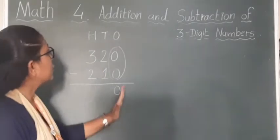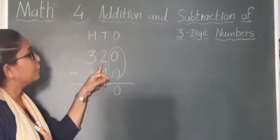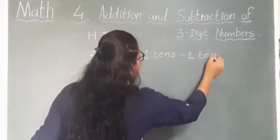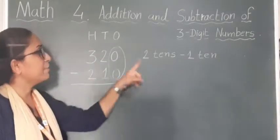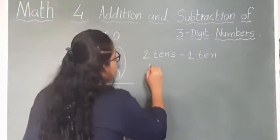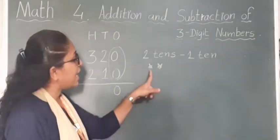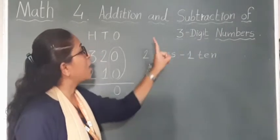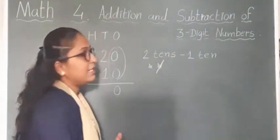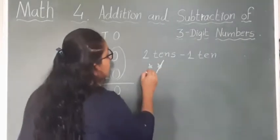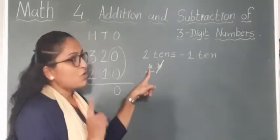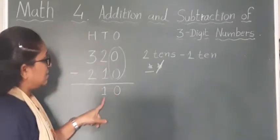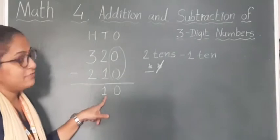In the second step we have to subtract the 10s. We have to subtract 1 from 2, so 2 tens minus 1 ten. I am going to explain with pictures. I am going to make 2 stars — here you can see I have made 2 stars, that means 2 tens. Now we have to cut 1 ten from 2 tens. The remaining star is only 1, that means 1 ten. So here we have to write down 1 in the 10s column.